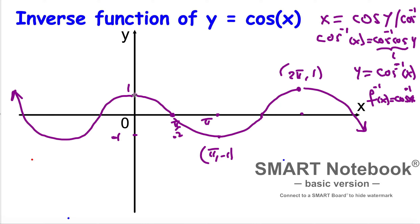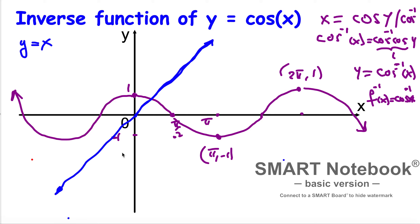But we want to restrict it. Before we do, let me draw the line y is equal to x — it goes like this. Now, looking at what domain to use: if I restrict the domain from 0 to π, the cosine x is going to pass the horizontal line test. Whenever I draw a horizontal line, it passes. So from 0 to π — to this point here.